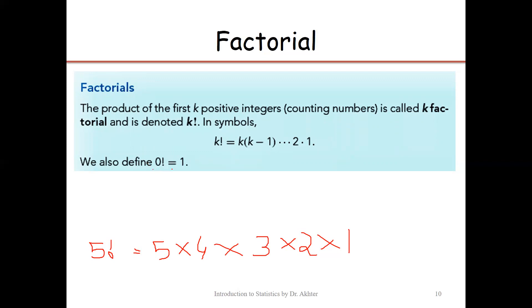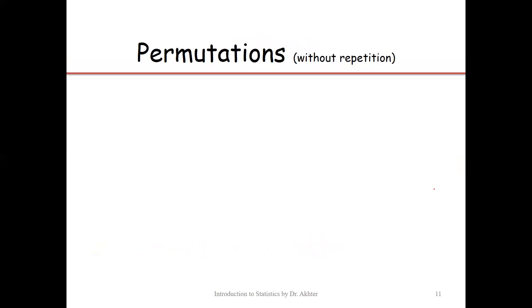Be careful: 0 factorial is always 1. Factorial is used for permutation. If we have to arrange k items on k places, that can be done in k factorial ways. If we have k items and k places, the arrangement can be performed by k factorial — this is permutation without repetition.